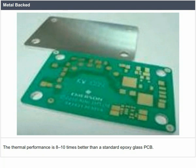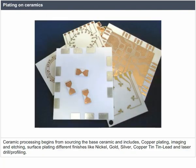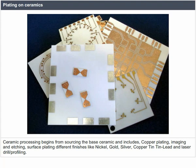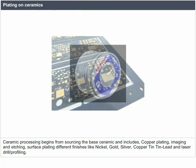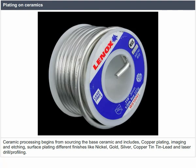Plating on ceramics: ceramic processing begins from sourcing the basic ceramic and includes copper plating, imaging and etching. Surface plating different finishes include nickel, gold, silver, copper, tin, tin-lead, and laser drill profiling.